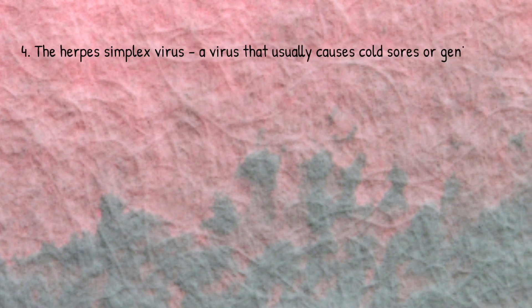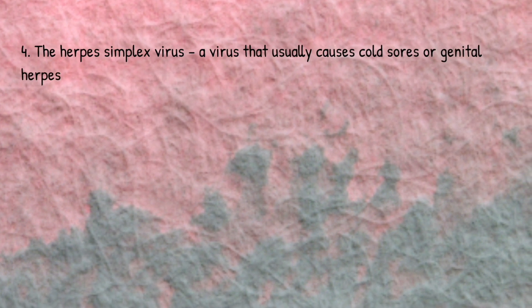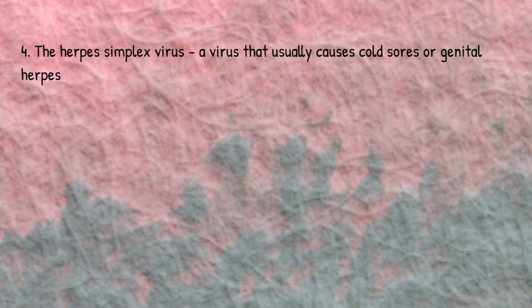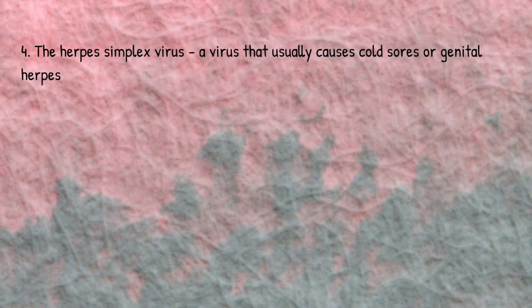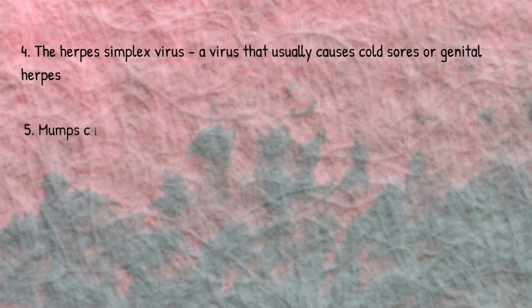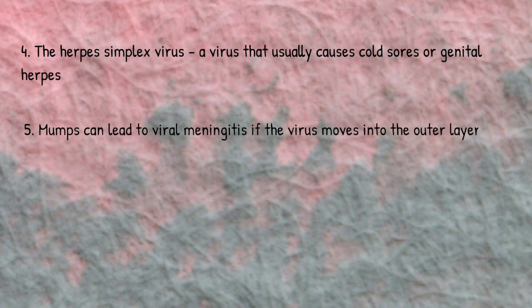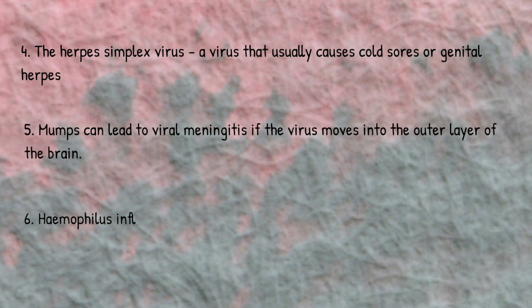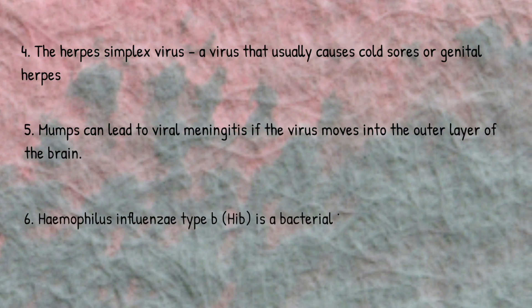The most common cause of viral meningitis is the herpes simplex virus, which is also a cause of cold sores and genital herpes. There are lots of other less common organisms which can cause meningitis, including the mumps virus and Haemophilus influenzae type B.